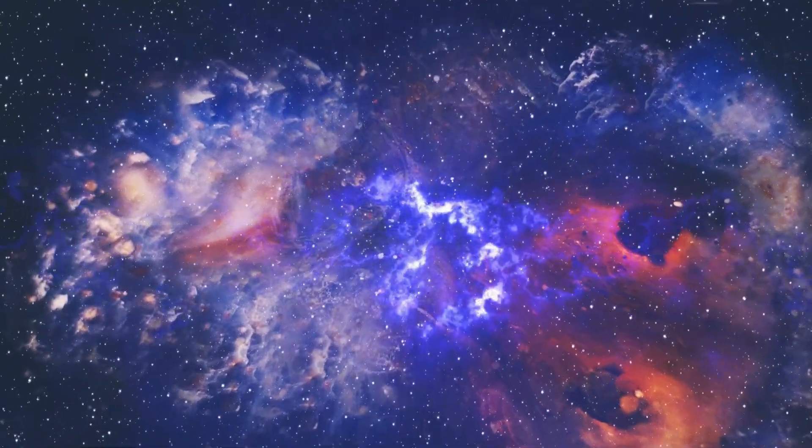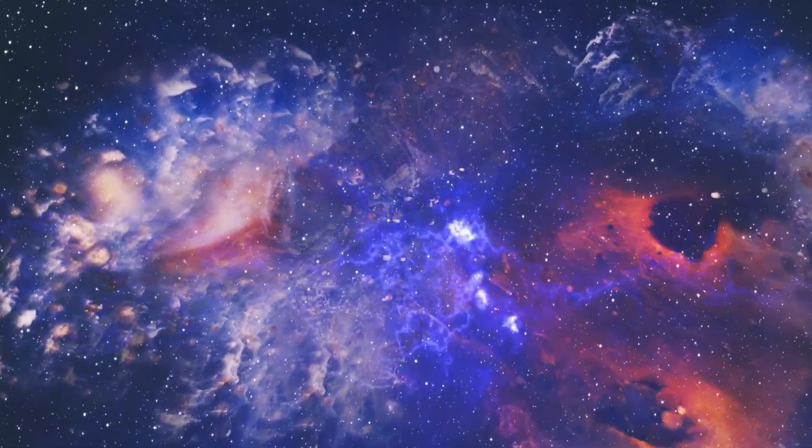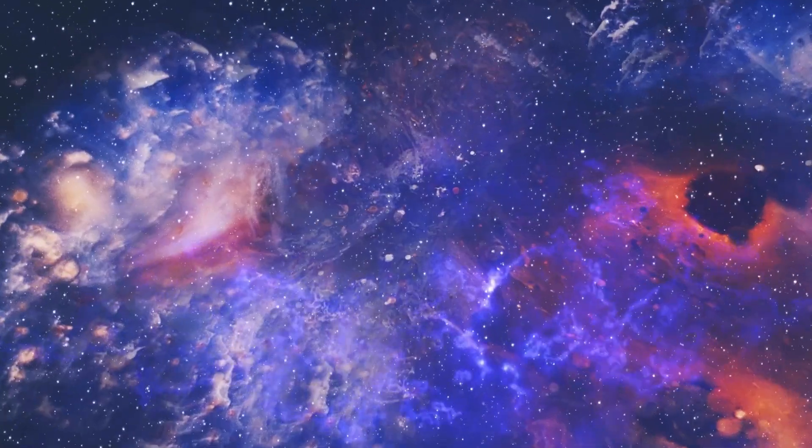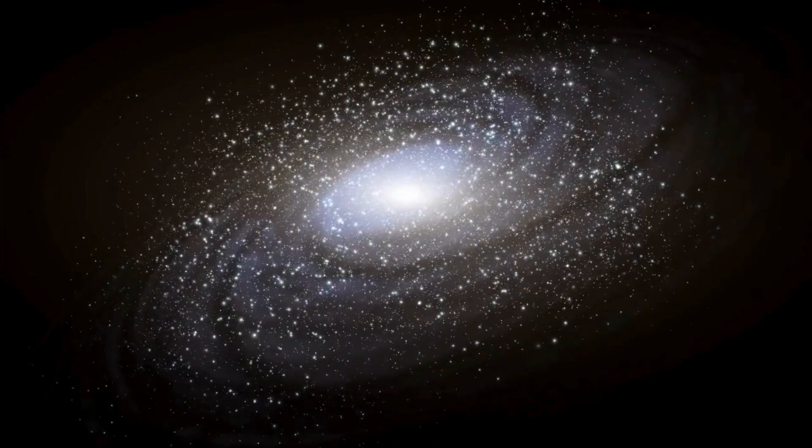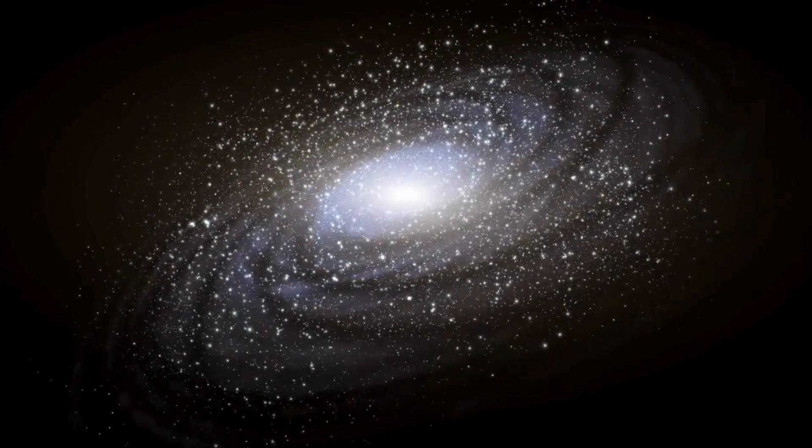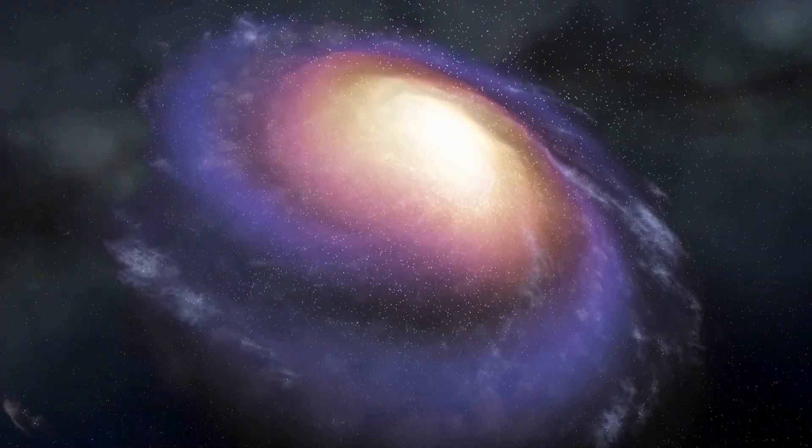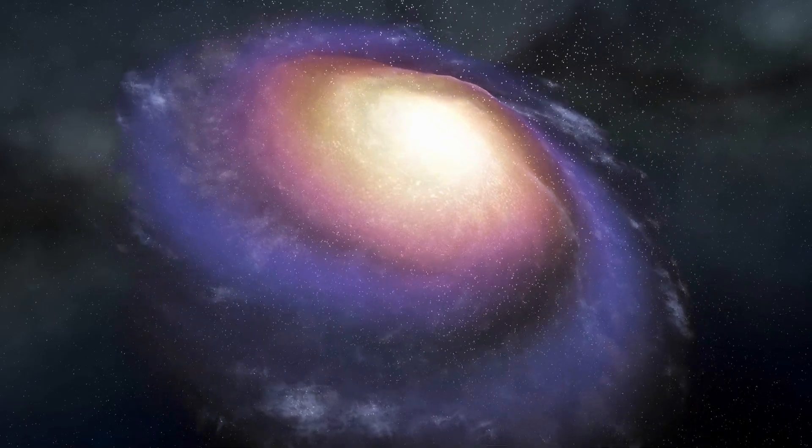The cause of this great dimming was traced back to a significant event in 2019 when Betelgeuse experienced a major outburst, essentially blowing off a substantial portion of its visible surface. This event created a massive surface mass ejection, which is highly unusual for a typical star, and was the primary cause of the dimming.